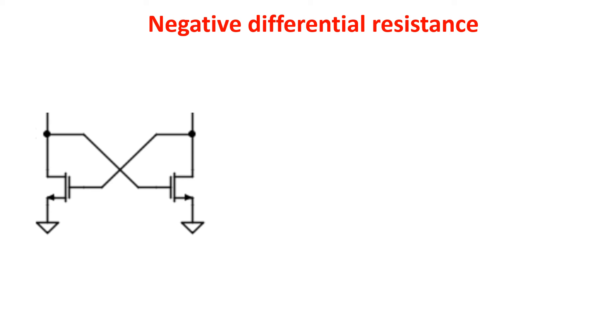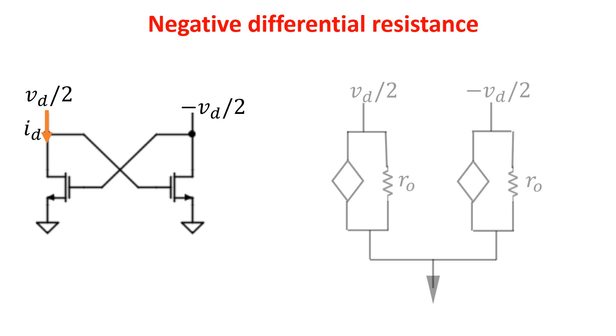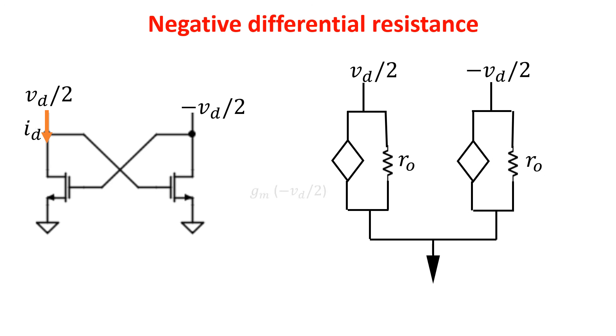Here we see a typical example of negative differential resistance, the cross-coupled pair. Let's calculate the resistance. If we apply a differential voltage here, we have to measure the current produced. Dividing the voltage by the current, we get the differential resistance. Because of the symmetry of the circuit, applying the differential voltage Vd is like applying Vd over 2 here, and minus Vd over 2 here. This is the small signal model, and this current source is controlled by minus Vd over 2, and this one by plus Vd over 2, because of the cross-connection.